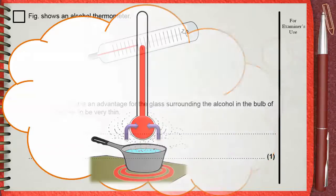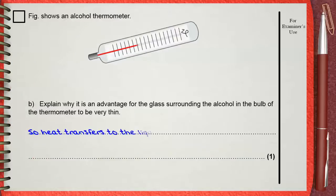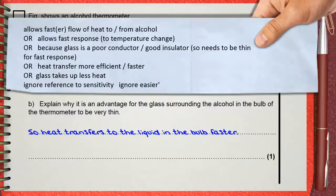We can say, so heat transfers to the liquid in the bulb faster. The mark scheme also adds: allow faster flow of heat to or from alcohol, or allow faster response to temperature change, or because glass is a poor conductor—a good insulator—so it needs to be thin for fast response. You can also say heat transfer is more efficient and faster. Another answer is glass takes up less heat.